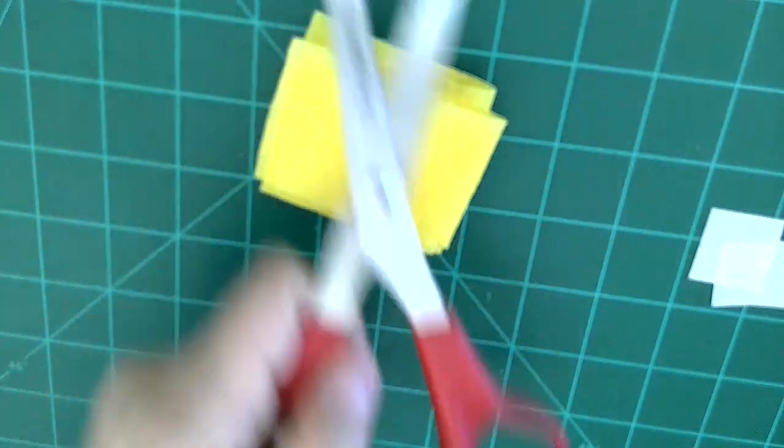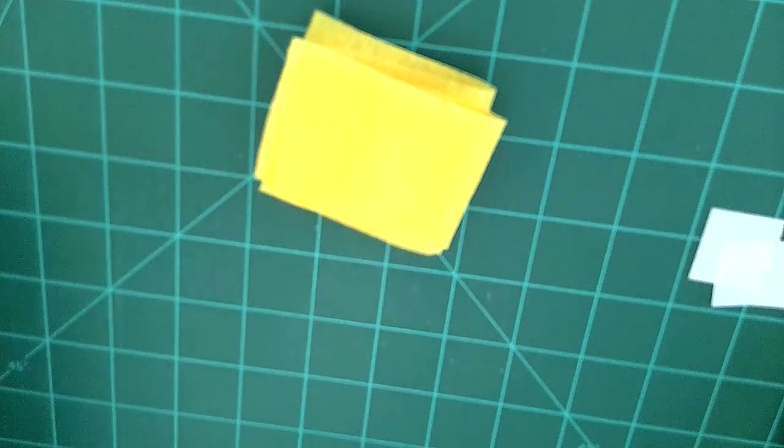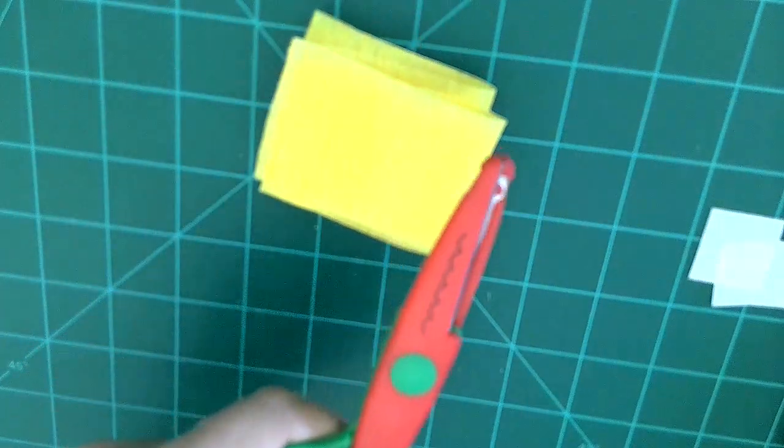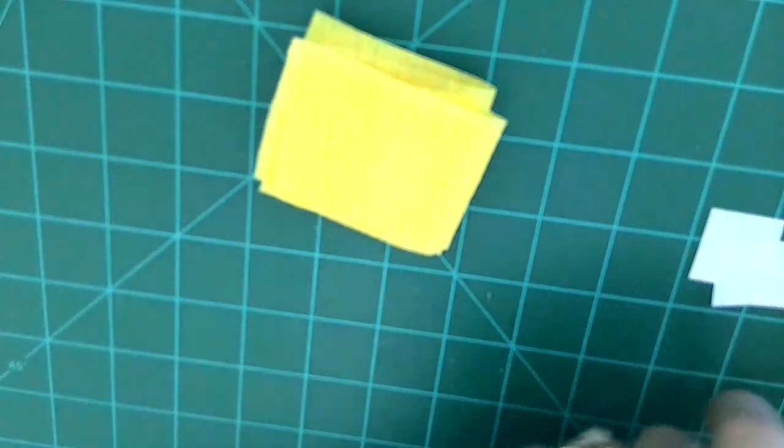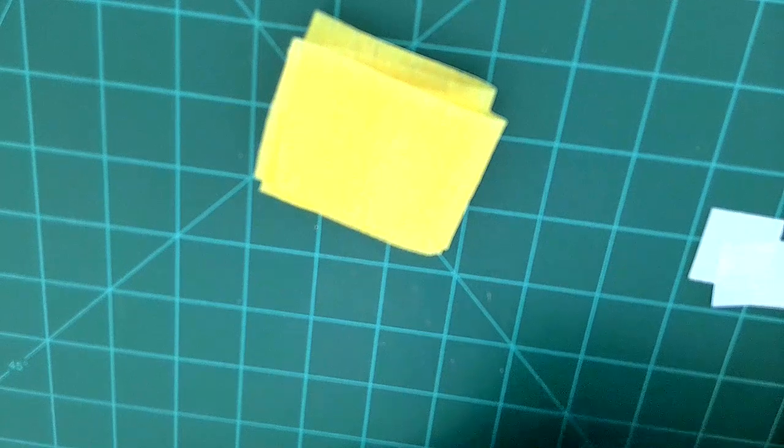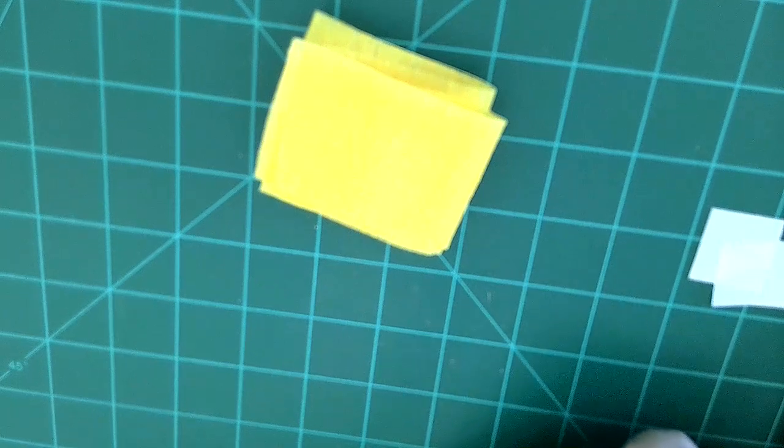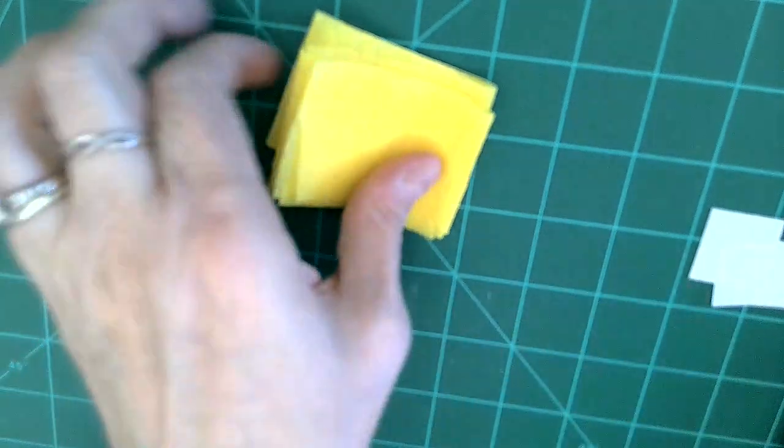So it will look like this. Now you're going to take a scissors. You can either use a regular scissors or you can use your fancy scissors here. I found it easier for this particular flower to do the regular scissors. So that's what I'm going to show you.